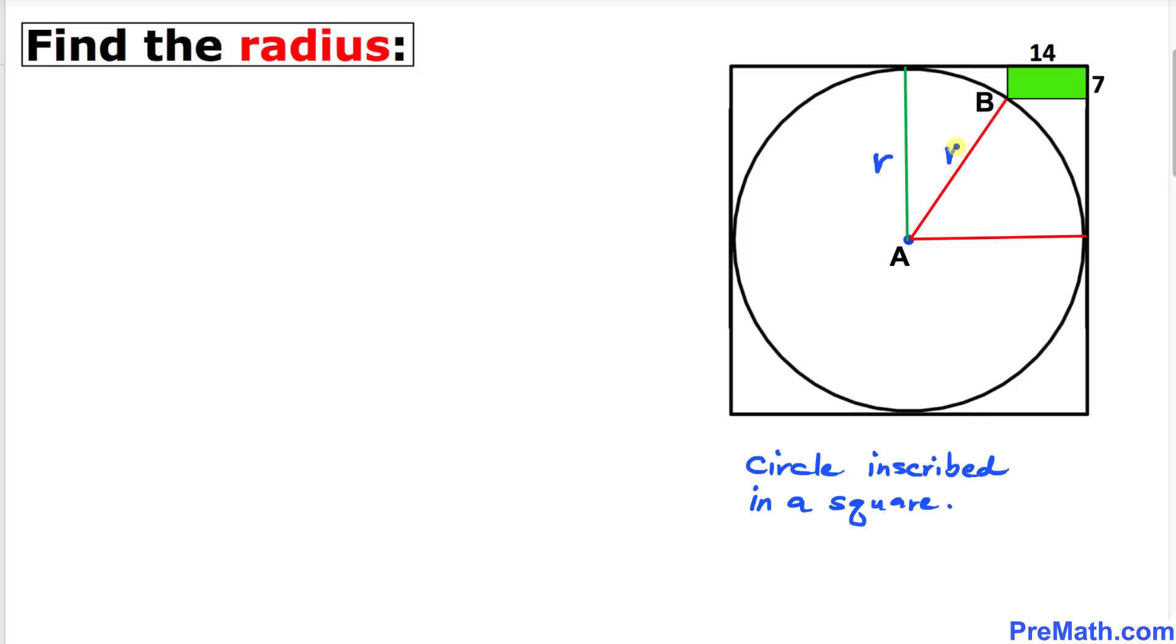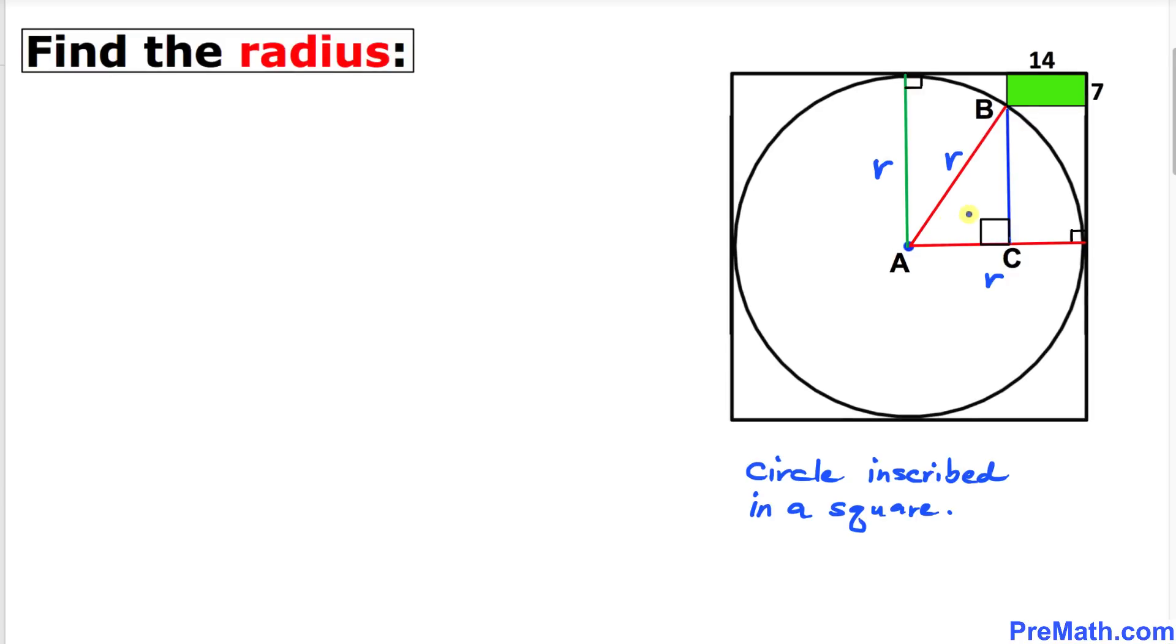This radius r as well and this is also the radius. Now let's draw a perpendicular from point B onto this line. Here's our much nicer looking diagram. We know that this line is radius r.